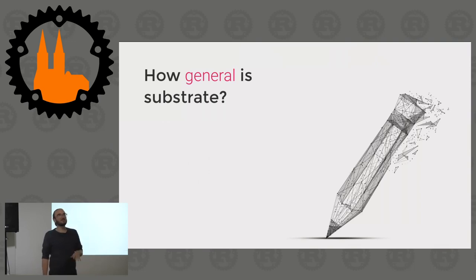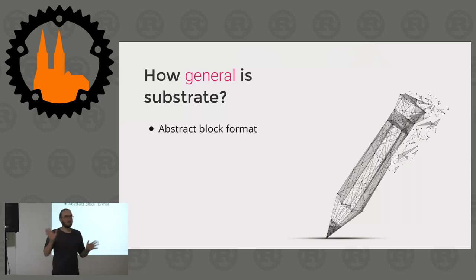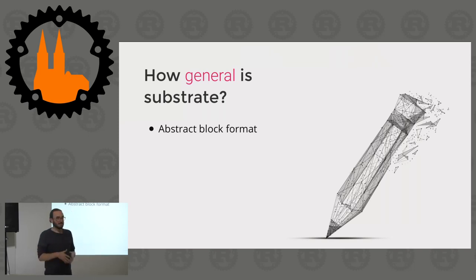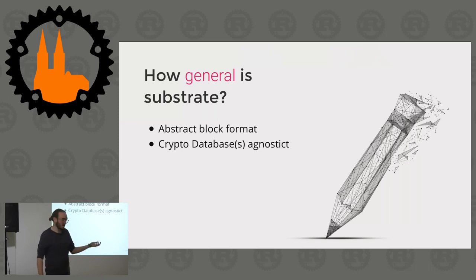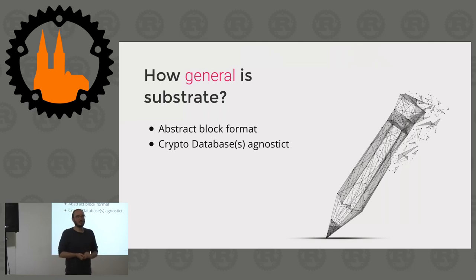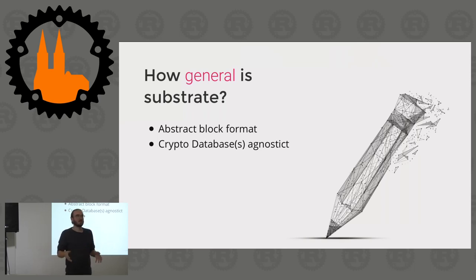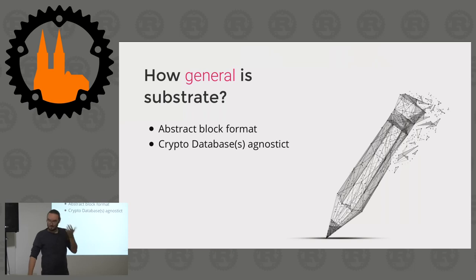In that context, how general can a general purpose blockchain system really be? We've tried to make it as general as possible by saying we don't know what's in your block. It's an abstract block format - just a binary block to most of Substrate. It's therefore often called an extrinsic because it doesn't have to be a state transition in the idea of Substrate. You can plug in your own crypto database and choose your storage depending on what kind of chain you want.